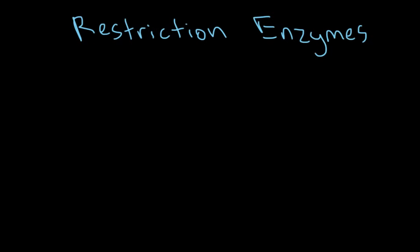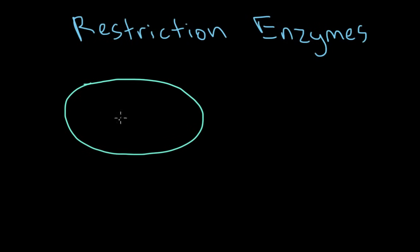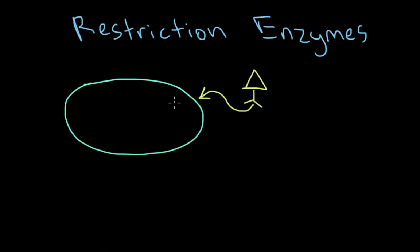Let's go through an example and hopefully that'll help answer that question. Let's imagine that we've got a bacteria and it's just floating around, doing its thing, and out of nowhere comes this virus. The virus is just kind of upset today, so it decides that it wants to infect this bacteria. What the virus does is it goes over to the bacteria and basically attaches to it.